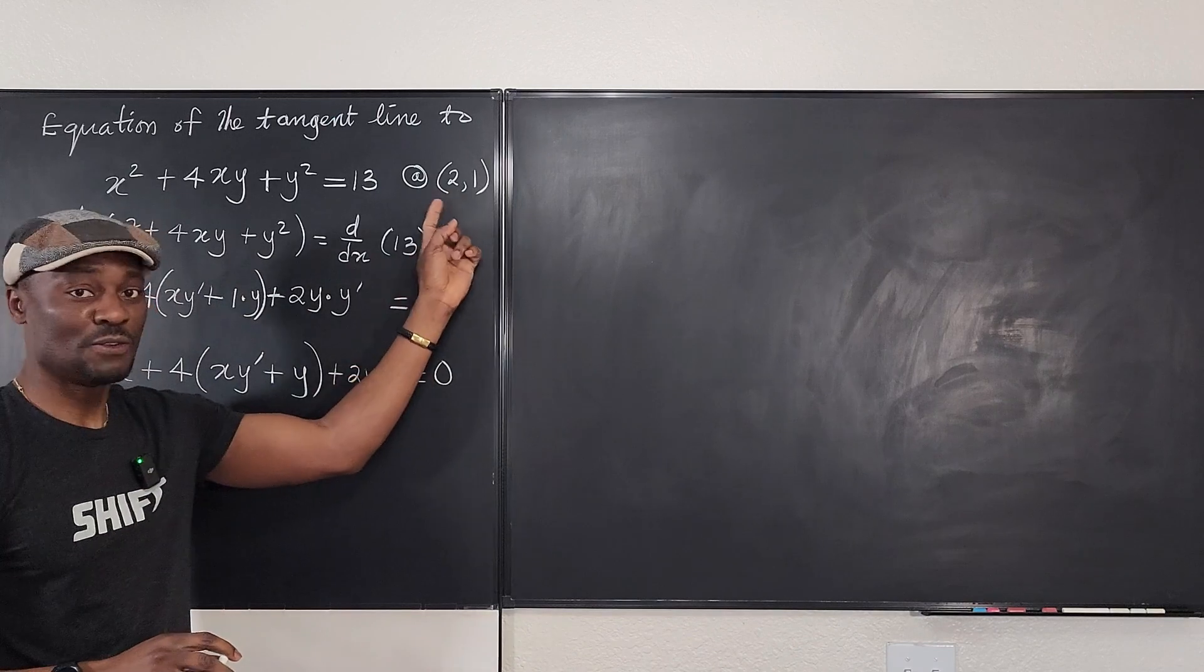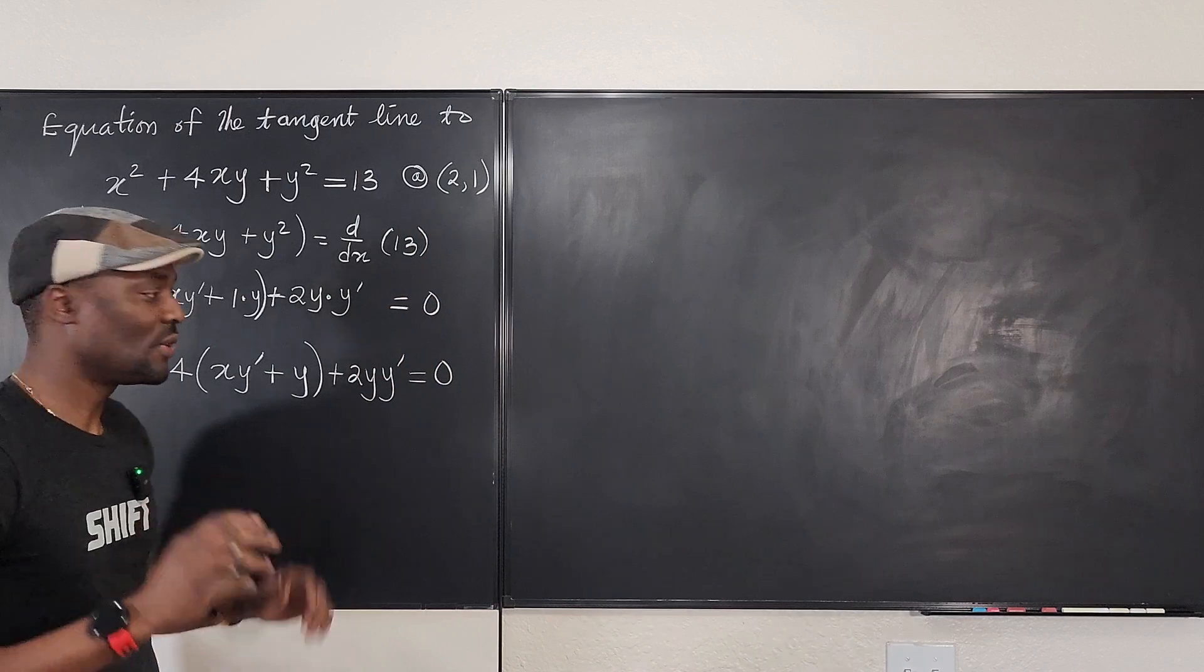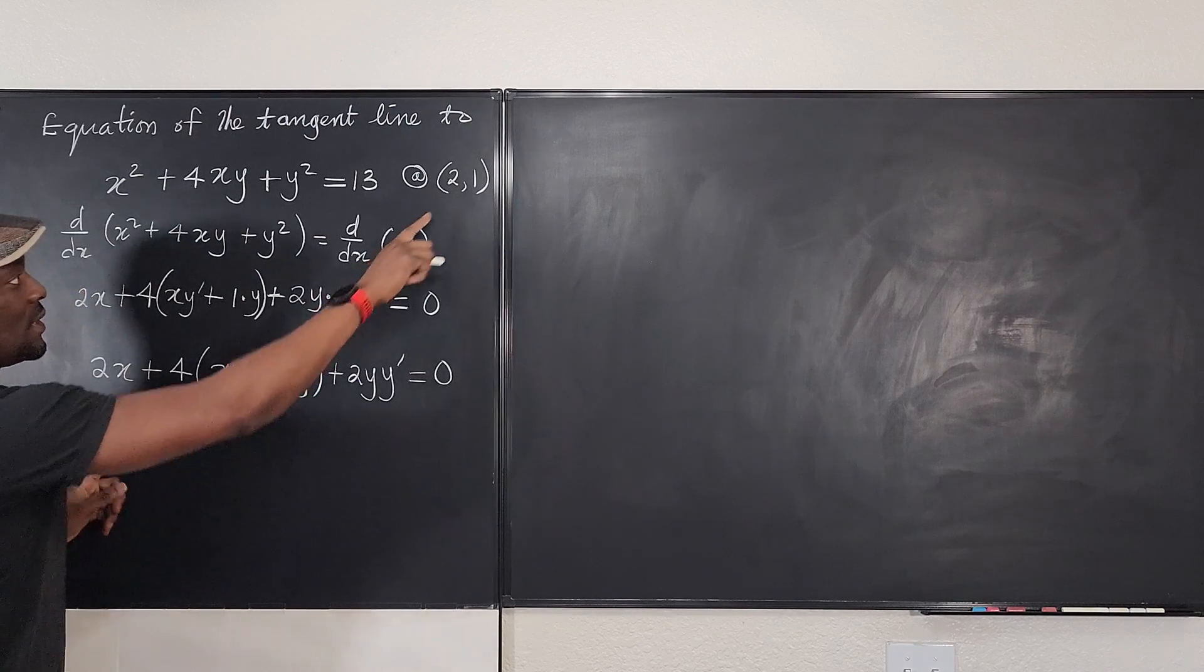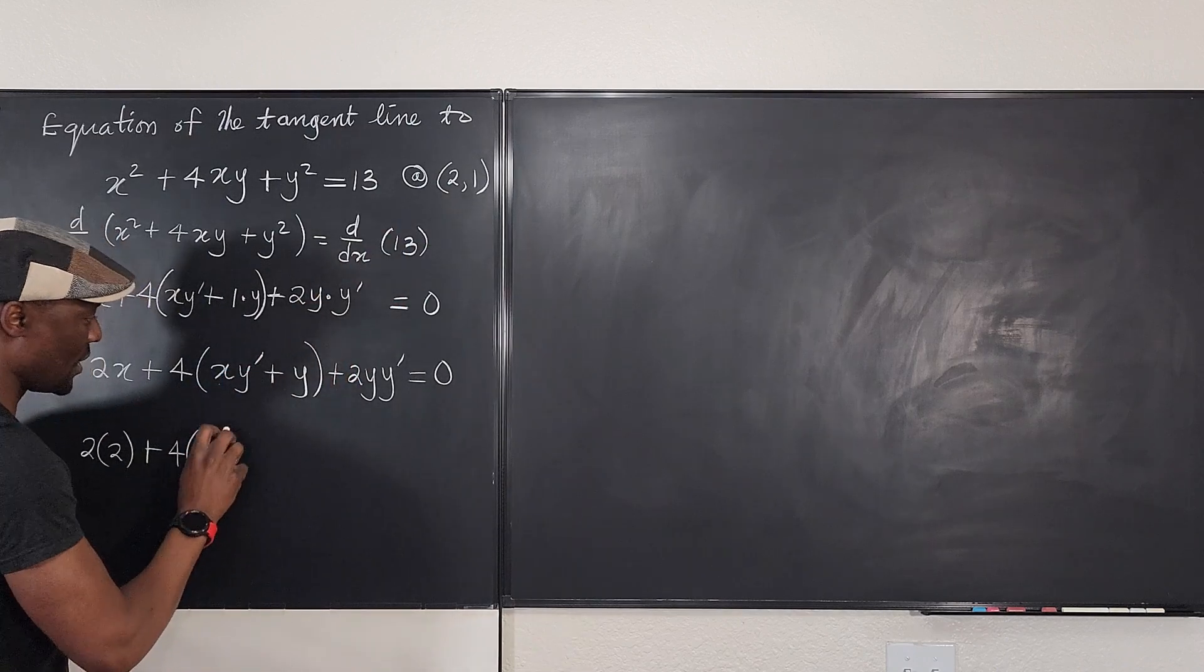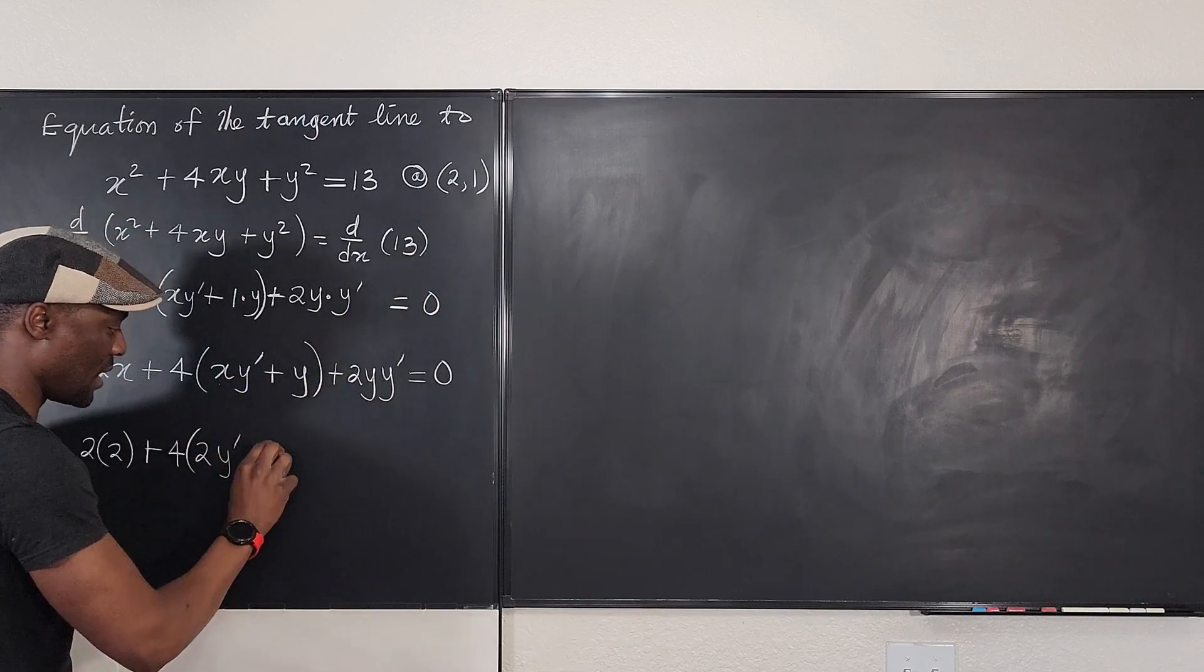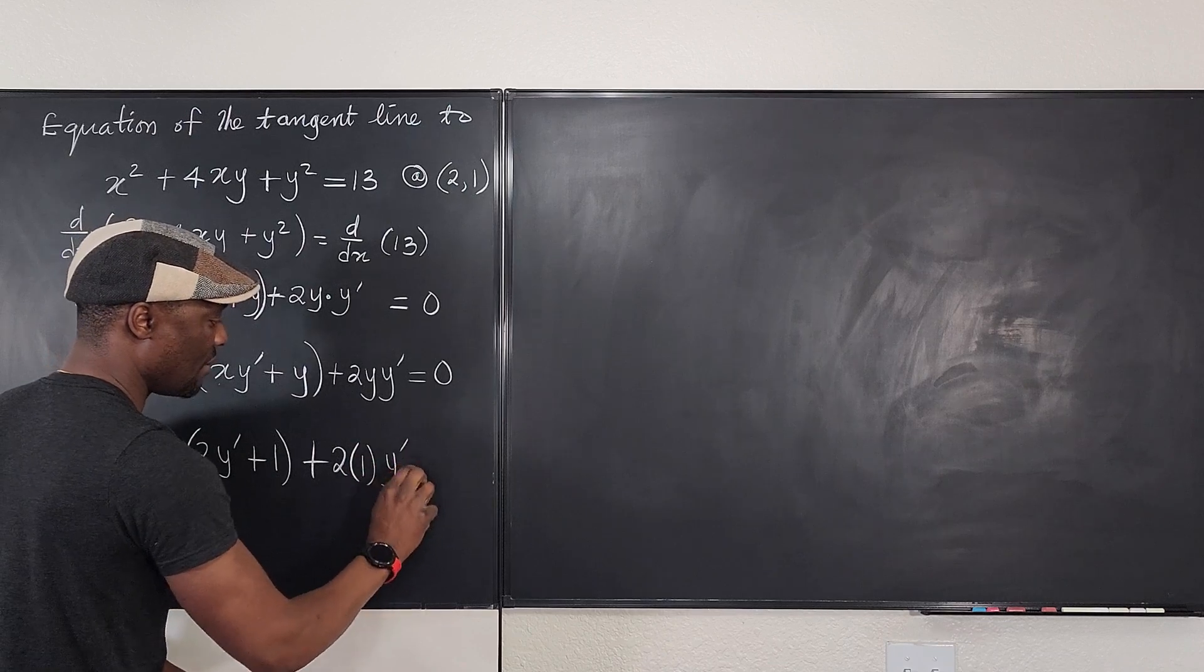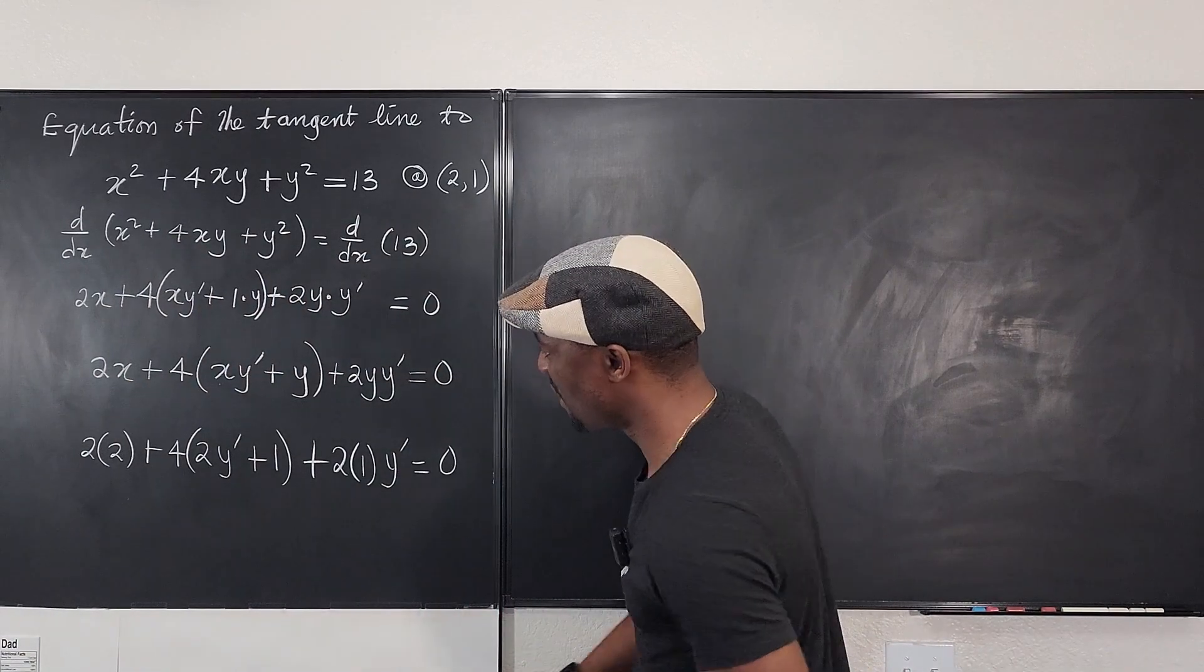Now the next thing is to substitute. Go pick up these values. x is equal to 2 and y is equal to 1. That's all you need to do next. Let's plug in 2 everywhere we get x. So I'm going to do 2 times 2 because 2 is equal to x, and it's going to be plus 4 times 2. And what is y prime? We don't know. So 2y prime plus what is y? y equals 1. I'm going to write plus 2 times, what is y? y is 1. And then you have y prime, which is equal to 0. That's all you have to do.